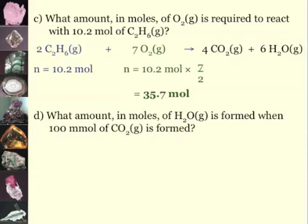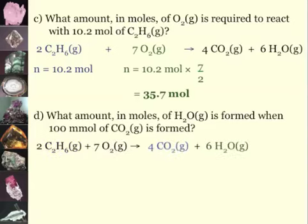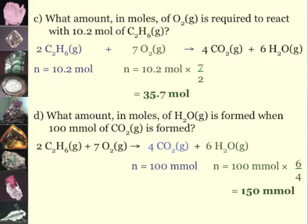The amount of moles of H2O formed when 100 millimoles of CO2 gas is formed. Same equation. I've got a given amount of 100 millimoles. I want my water vapor. Wanted is 6 over given is 4, which means 150 millimoles or 0.15 moles is formed.